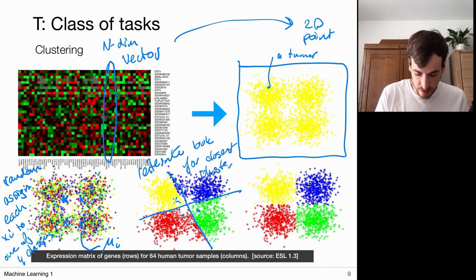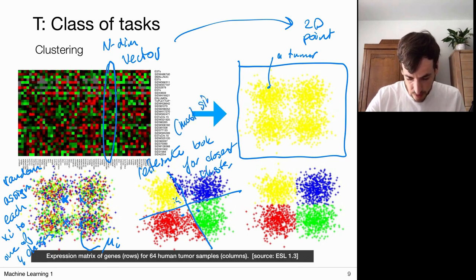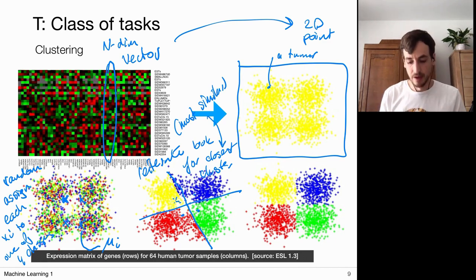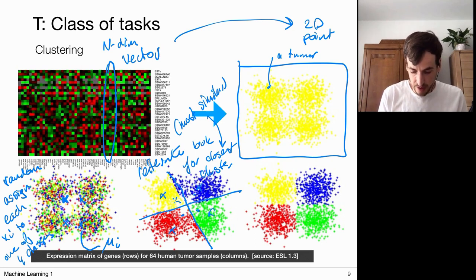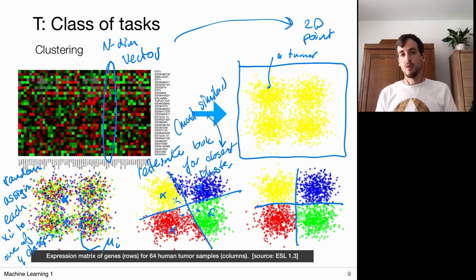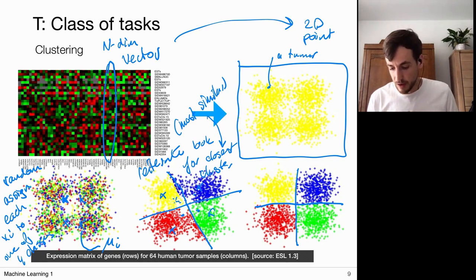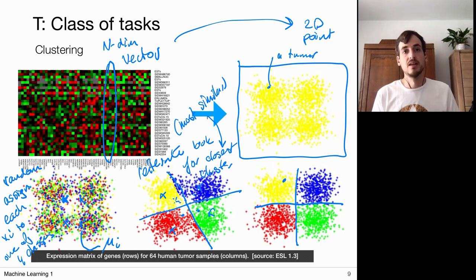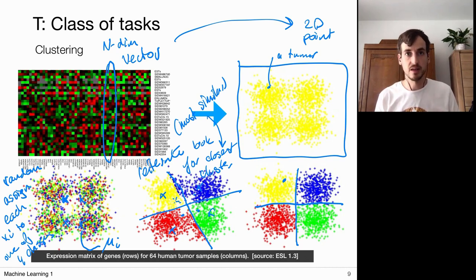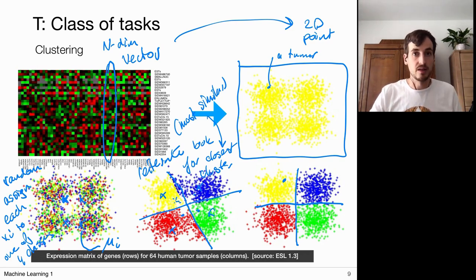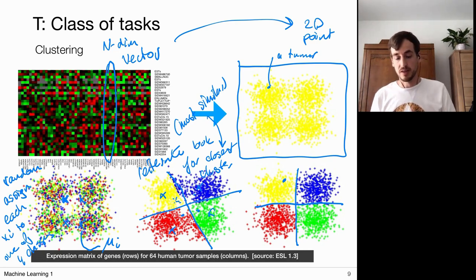We compute the mean of each cluster, iterate, and get a final partition. This tells us how to partition all the data into four classes. If a new point comes in, we can find which cluster it's closest to and know what kind of tumors are similar. We can use this later in our analysis — if we have to make decisions about treatment, we can look for treatments that were successful on patterns in the same cluster and maybe use the same treatment for this type of tumor.